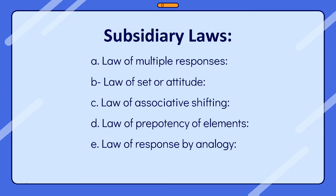Thorndike formulated these laws based on his experiments. According to the law of readiness, the cat was ready to learn because it was hungry — hunger motivated the cat to open the door, just as the dog was motivated by the bell. According to the second law, the cat was repeatedly given trials which strengthened its learning. Finally, on each trial, the cat was given reinforcement in the form of fish, which encouraged it to continue its effort to learn to open the door, and the subsidiary laws support these findings.